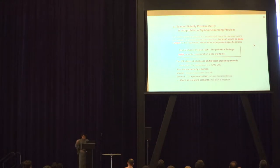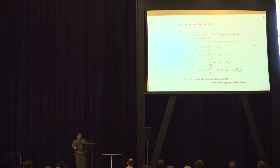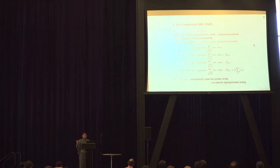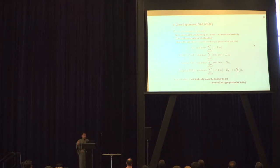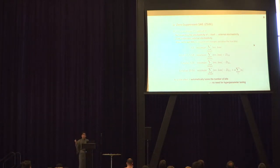We further analyzed entropy minimization and noticed it is not modeling the external stochasticity of the environment, which you cannot control. So we propose the zero-suppressed SAE that addresses external stochasticity by not using new bits for insignificant changes — it penalizes the number of true bits. As a side effect, it also tries to make the number of bits used smaller, which means there is less need for hyperparameter tuning.